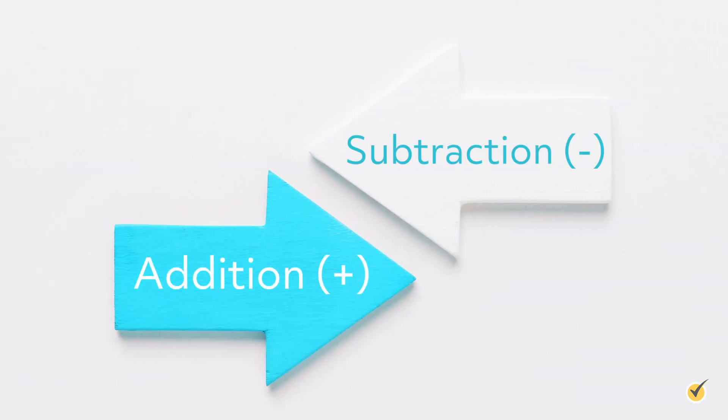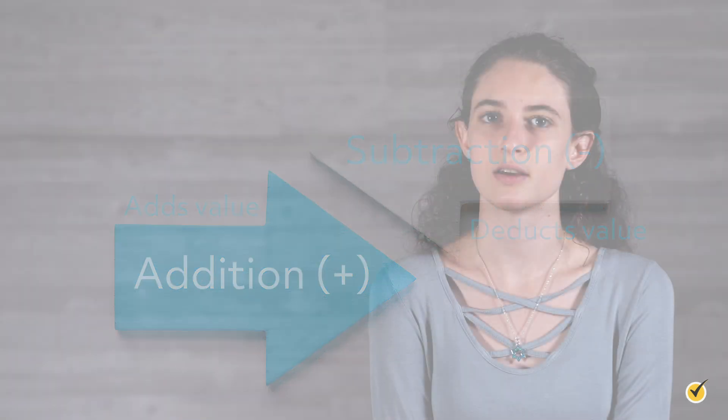Essentially, addition and subtraction are opposite operations. One adds value, and the other deducts value. One strategy for visualizing these two operations is to use a number line. We will use a number line to illustrate the following examples.